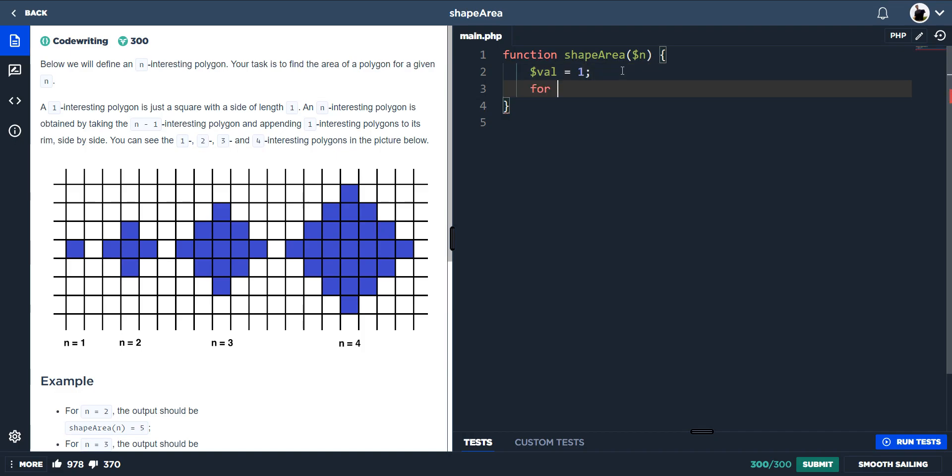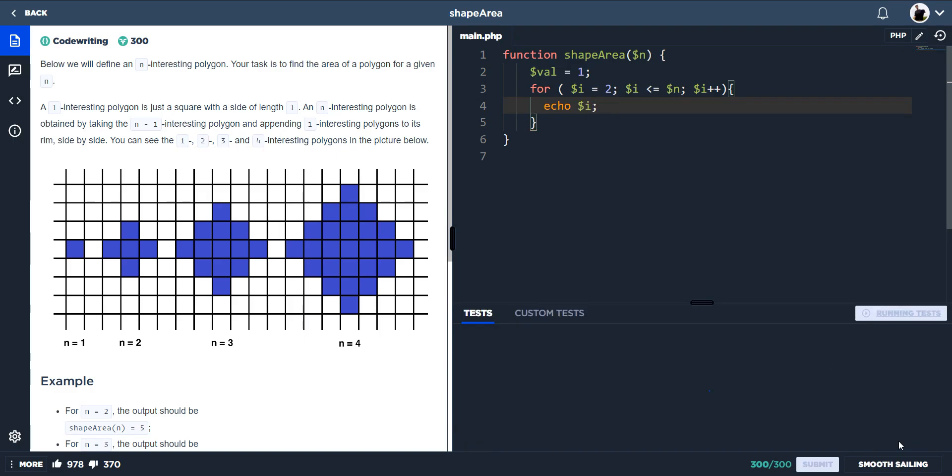The next one we want to do is a for loop. So for i equals 2, i is less than or equal to n. I'll explain all of this. I'll explain all of this once I've done the loop. And then we want to do i, increment i by 1 each time. So I'm just going to do echo, and we'll echo i.